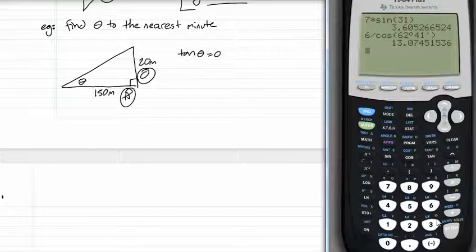I still substitute in my values. Tan theta equals opposite was 20, adjacent was 150. Now here's where it's different.